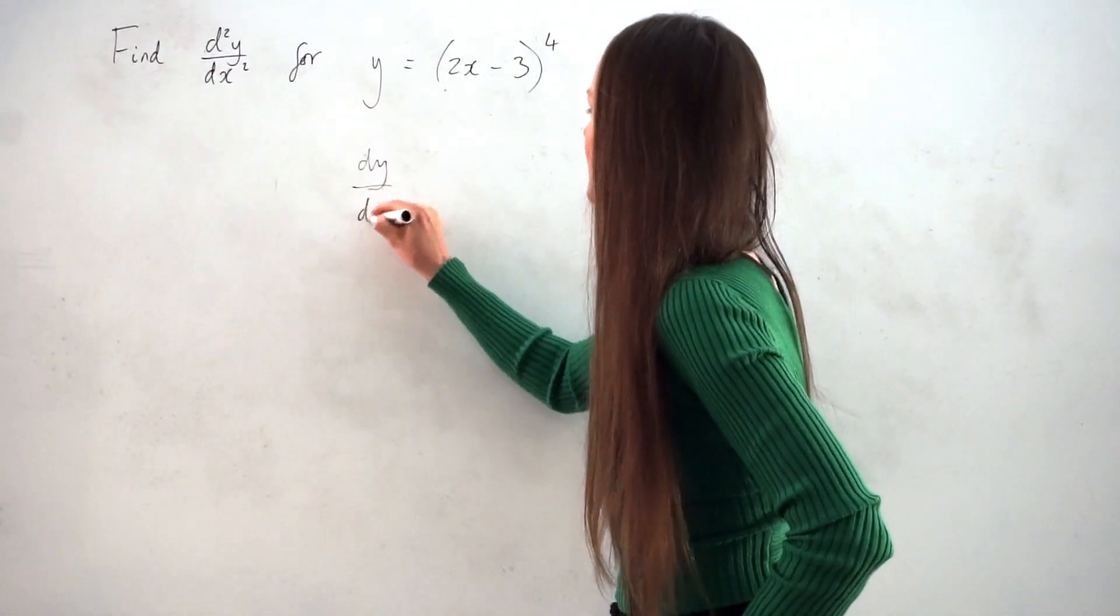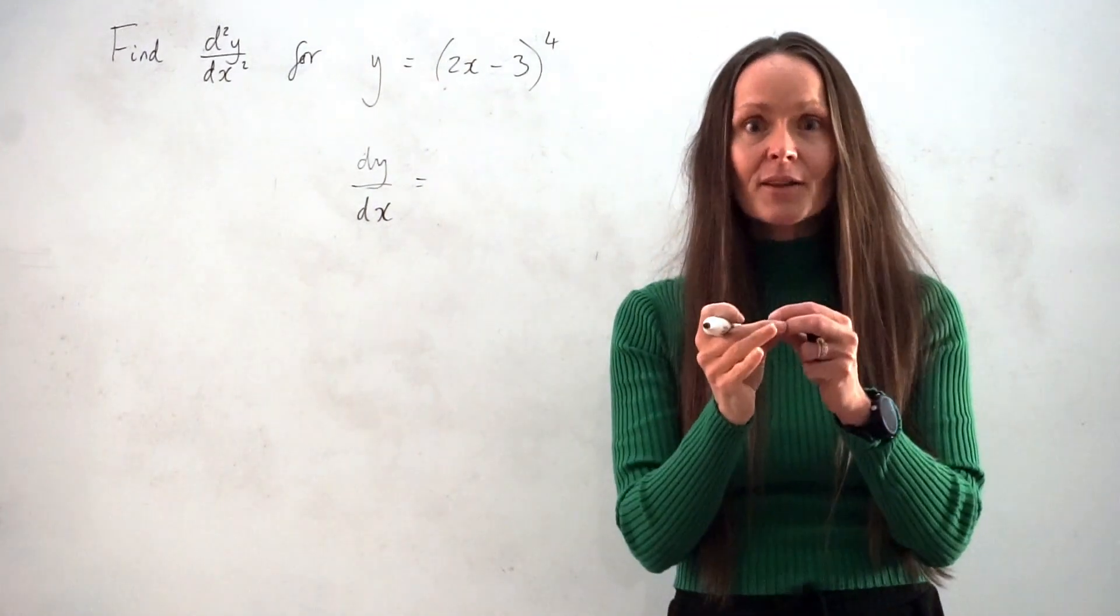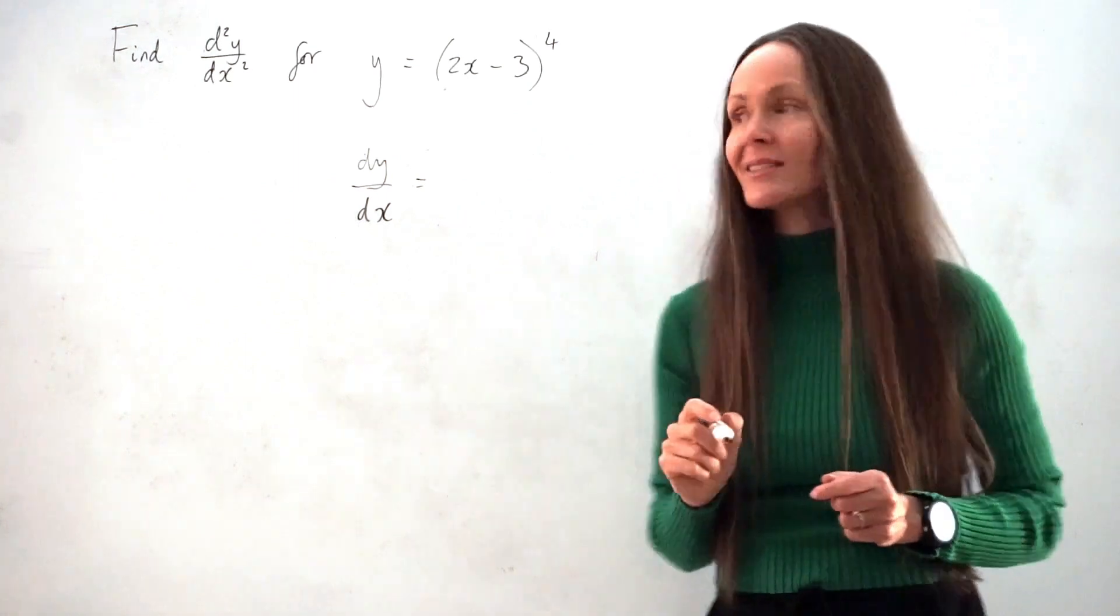And remember, when you differentiate using the chain rule, you differentiate the outside of the brackets, the inside of the brackets, and you multiply those two answers together.